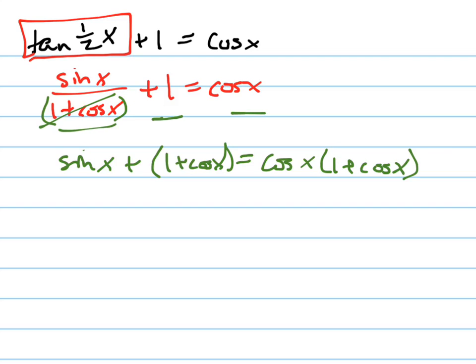Now this might look more complicated, but it actually isn't because what I'm going to be able to do is distribute this cos(x) in, which will give me a cos²(x).